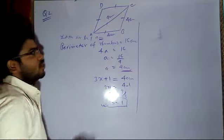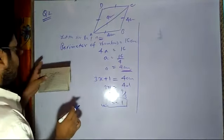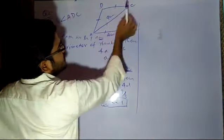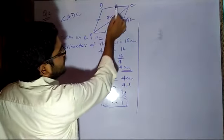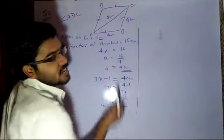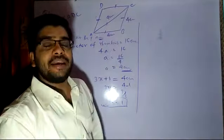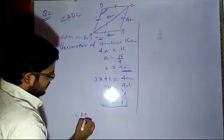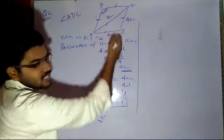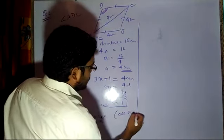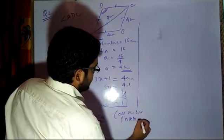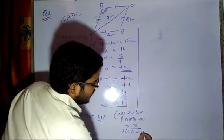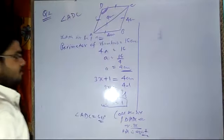The second part asks for angle ADC. Looking at the figure, this side, this side and this side — AD, DC, and AC — all three sides are equal, and ADC forms an equilateral triangle. So very easily you can say that angle ADC is equal to 60 degrees. Reason: all the sides of triangle ADC are equal, so ADC is an equilateral triangle.